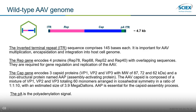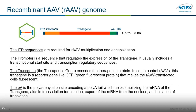Now let's take a look at the recombinant AAV genome. In the recombinant AAV genome, we still have two ITRs, but the rep gene and cap gene have been replaced by a transgene and a promoter region that regulates transgene expression. The transgene is also called the therapeutic gene. The intact genome size for a recombinant AAV can be anywhere from about 2 kilobases to 5 kilobases. Since there is no rep and cap gene in the recombinant AAV genome, the recombinant AAV can't replicate by itself — a very important safety feature for recombinant AAV-based therapeutics.